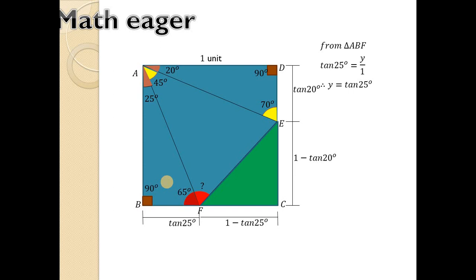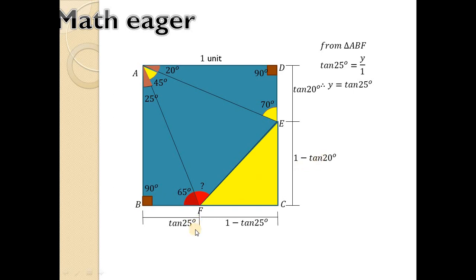From triangle EFC, this is also a right-angled triangle and we can use the Pythagoras theorem. EF squared equals EC squared plus CF squared. So since EC is 1 minus tan(20°) and CF is 1 minus tan(25°), the magnitude of EF will be the square root of (1 minus tan(20°))² plus (1 minus tan(25°))².